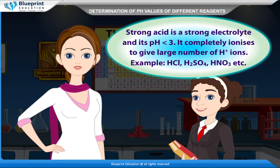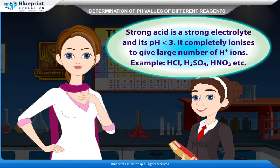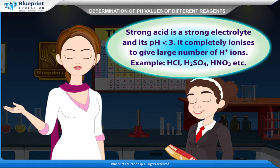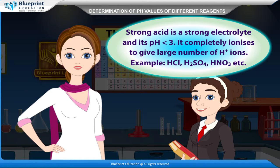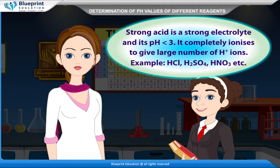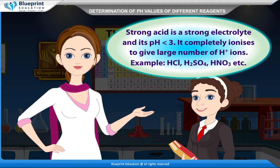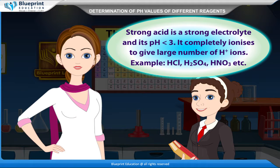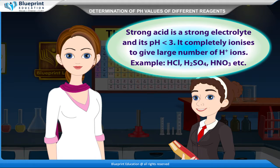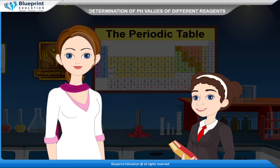Concept of strong and weak acids and bases: A strong acid is a strong electrolyte and its pH is less than 3. It completely ionizes to give a large number of H+ ions. Examples: HCl, H2SO4, HNO3.